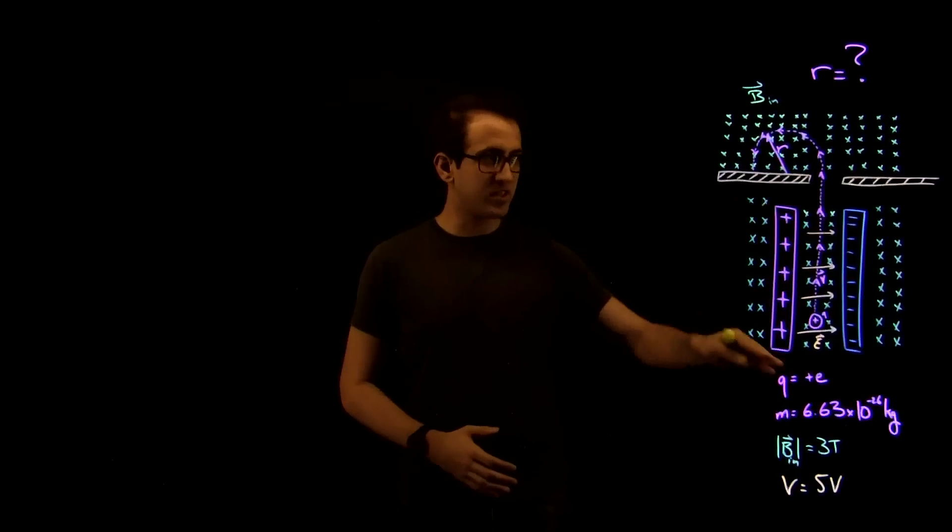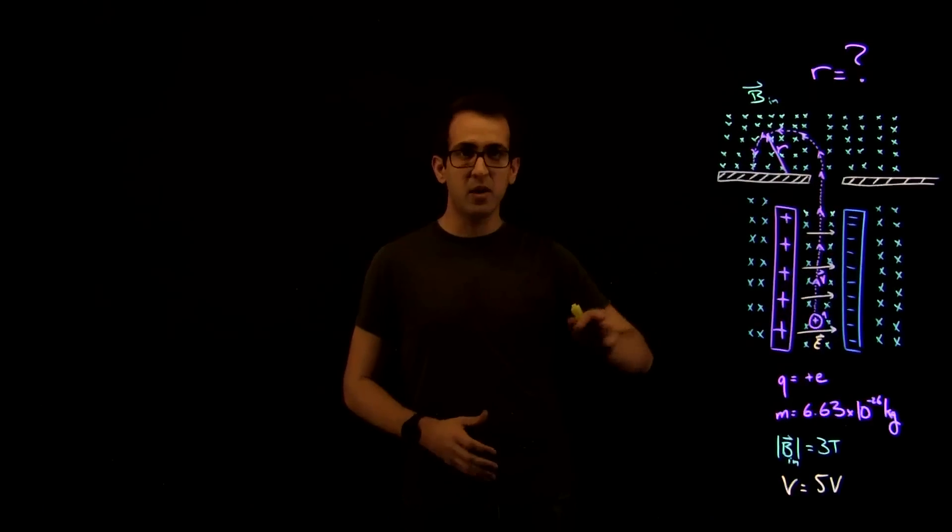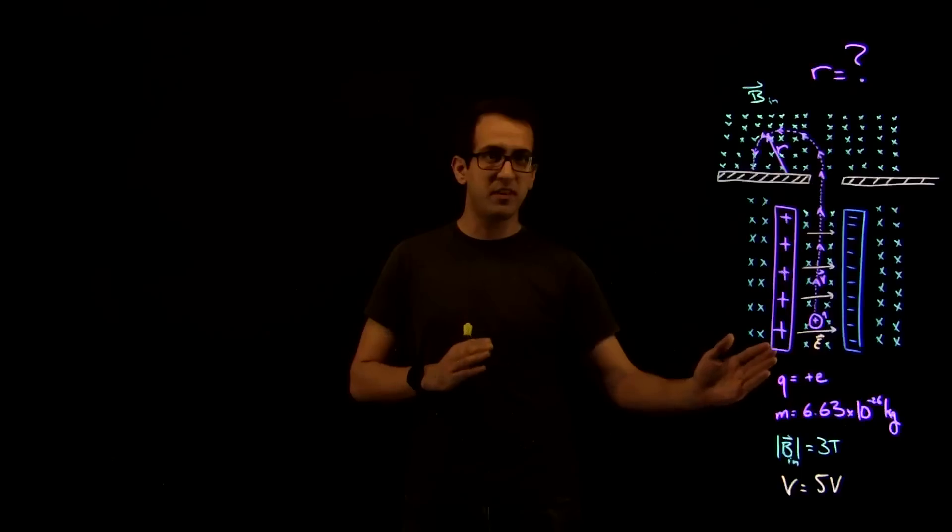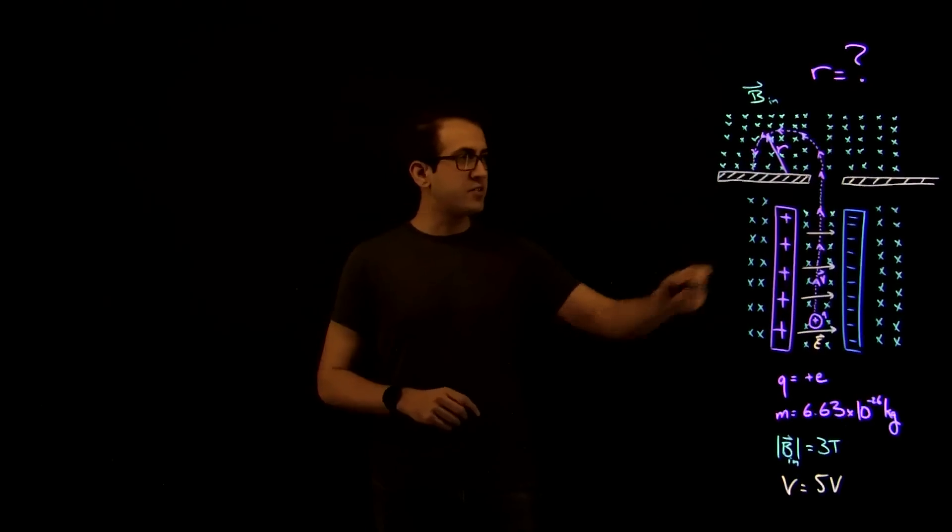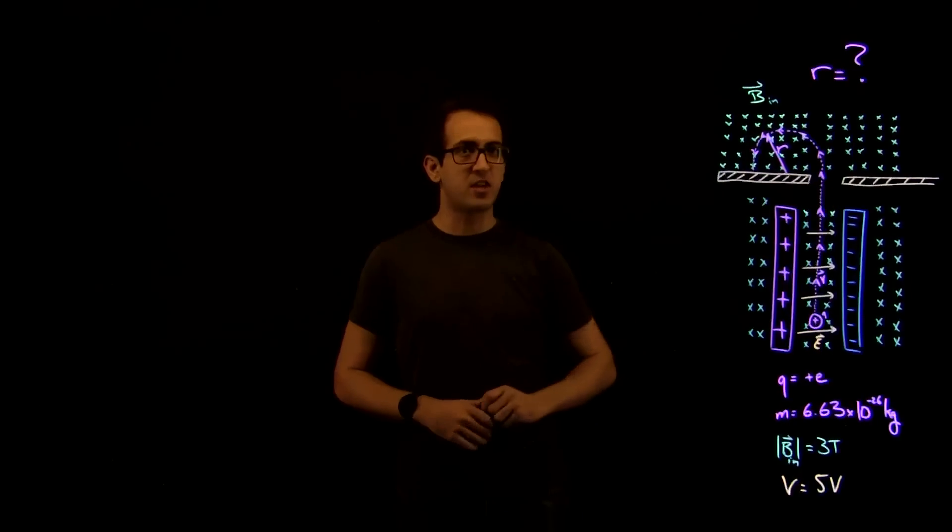Pass it through a velocity selector here, which will basically mean that only the argon is able to get through, and then it enters a mass spectrometer, which is the section up here.